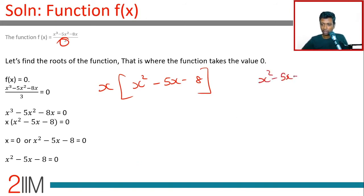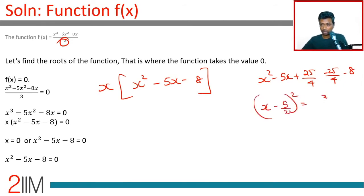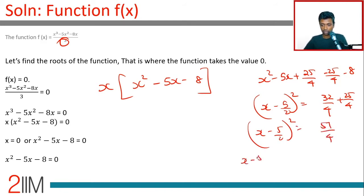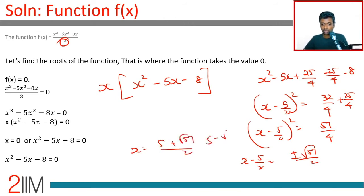We complete the square: x squared minus 5x plus (5/2)² minus 25/4 minus 8, which gives (x minus 5/2)² equals 32/4 plus 25/4, so (x minus 5/2)² equals 57/4. Therefore x minus 5/2 equals plus or minus root(57)/2, giving x equals (5 plus root 57)/2 or x equals (5 minus root 57)/2. So there are three roots: 0, (5 + √57)/2, and (5 − √57)/2.